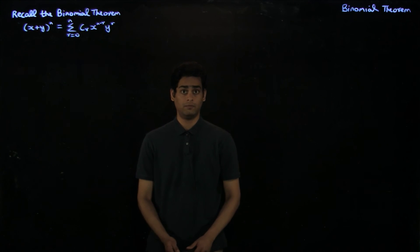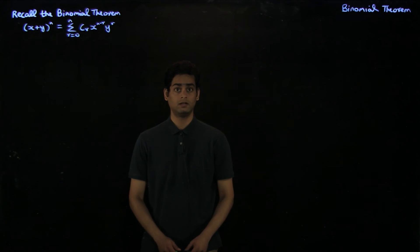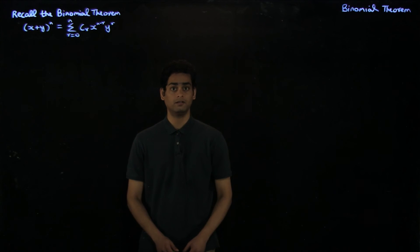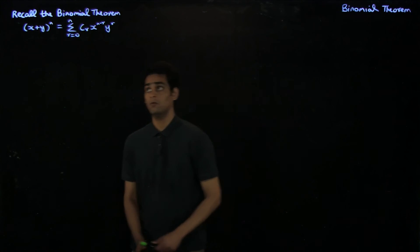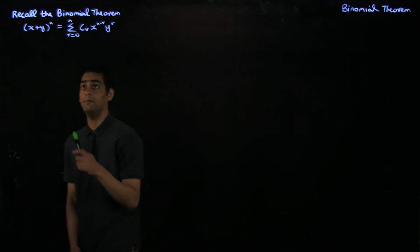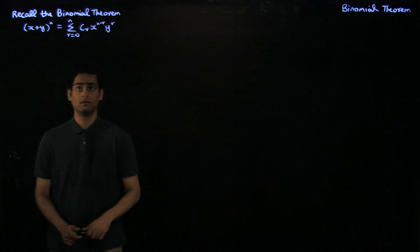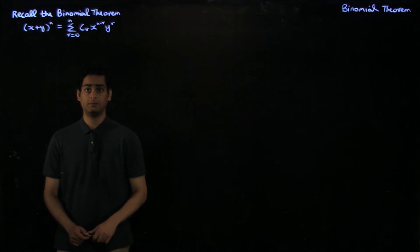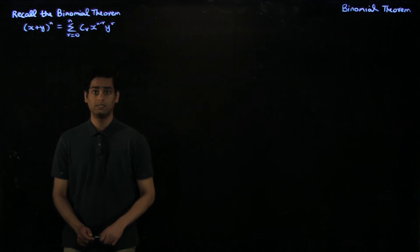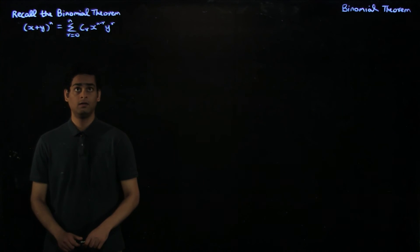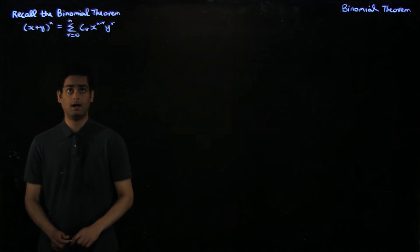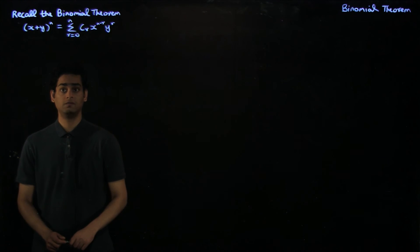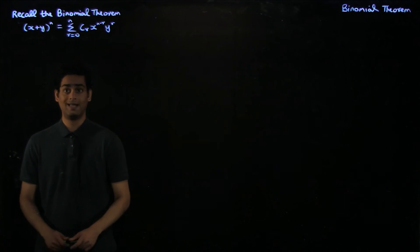Welcome to a new lecture on the binomial theorem. In this lecture, we will look at certain divisibility results which can be derived based on the binomial theorem. Recall the binomial theorem is given by (x + y)^n equals summation r equal to 0 to n, nCr, x power n minus r, y power r, where we use Cr to denote nCr.